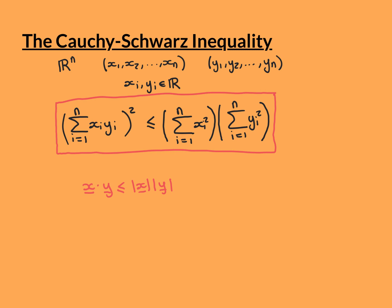Now if we take the square roots of both sides of this inequality — and thankfully, because the square root function is strictly increasing, we don't need to worry about the inequality no longer being true. We can take the square root of both sides and the inequality still holds. This then says that the dot product of x and y is less than or equal to the modulus of x times the modulus of y.